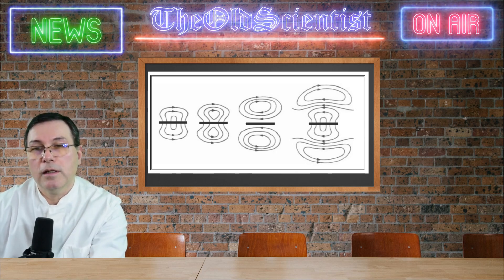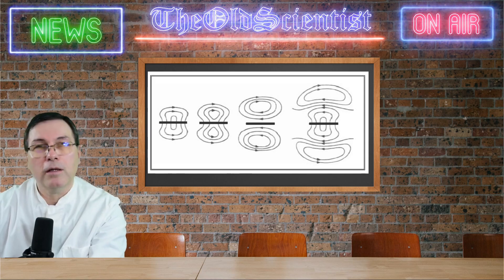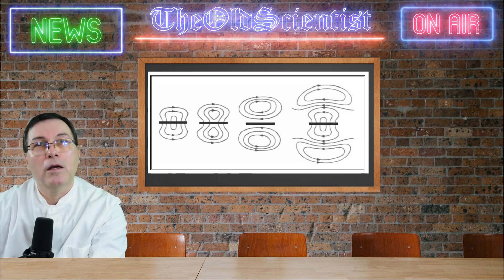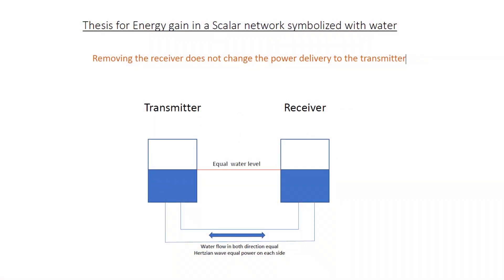Now, let us look here at the scalar network in a different way and I would like to compare it with the flow of water. Here in these short slides I want to demonstrate the flow of the energy of the waves in the coils and here I symbolize both coils with two water tanks which are filled with water. The water is representing the energy level we have, the strength of current or power which resides at that very same time on both sides.